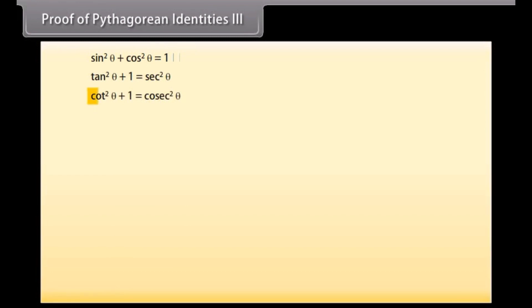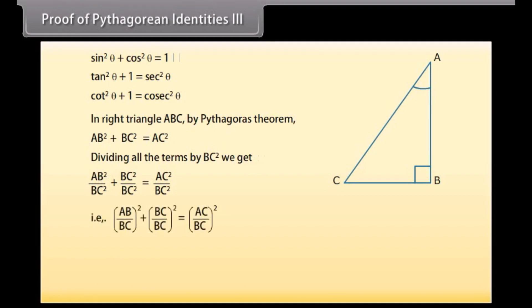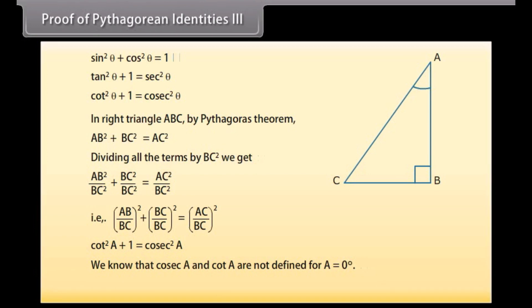Proof of Pythagorean Identity 3: The last identity is cot squared theta plus 1 is equal to csc squared theta. Taking right triangle ABC, by Pythagoras theorem AB squared plus BC squared equals AC squared. Dividing all terms by BC squared, we get AB over BC squared plus BC over BC squared equals AC over BC squared. That is cot squared A plus 1 equals csc squared A. Note that csc squared A and cot A are not defined for A equal to 0°, so this is true for all A such that 0° < A ≤ 90°.